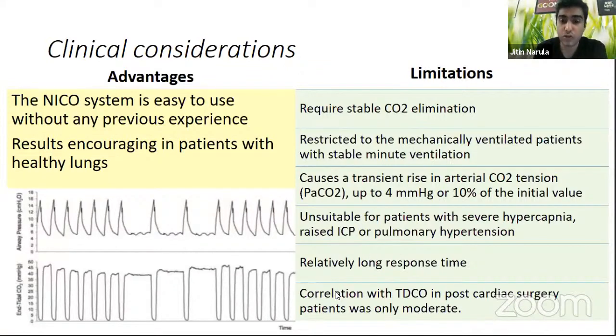However, the NICO method is limited by the requirement of stable CO2 elimination and is restricted to mechanically ventilated patients with stable minute ventilation. It causes a transient rise in arterial CO2 up to 4 mmHg or 10% of initial baseline. It is unsuitable for patients with severe hypercapnia, raised ICP, or pulmonary hypertension, has a relatively long response time, and correlation with thermodilution cardiac output in post-cardiac surgery patients has been only moderate.